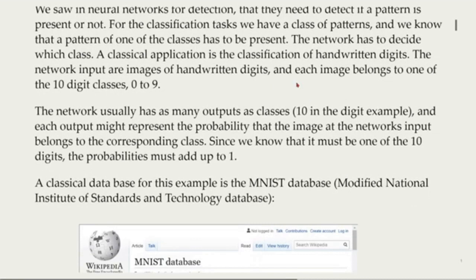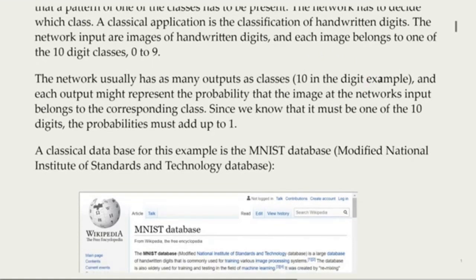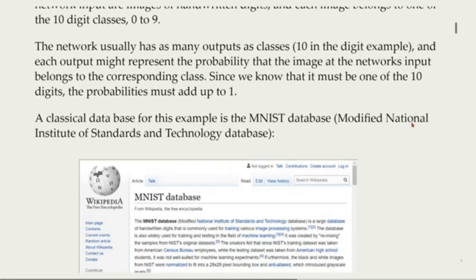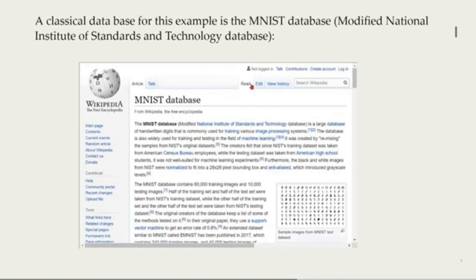The network usually has as many outputs as classes, ten in the digit example. And each output might represent the probability that the image at the network's input belongs to the corresponding class. Since we know that it must be one of the ten digits, the probabilities must add up to one. A classical database for this example is the MNIST database, the Modified National Institute of Standards and Technology database.